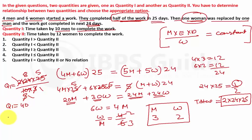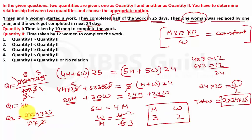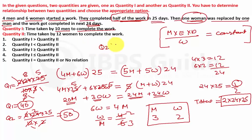Quantity 2: time taken by 12 women = (2 × 24 × 25) / (12 × 2) = 1200/24 = 50 days. Comparing: Quantity 2 (50) is greater than Quantity 1 (40). So Quantity 2 > Quantity 1 — option number 2 is the correct answer.